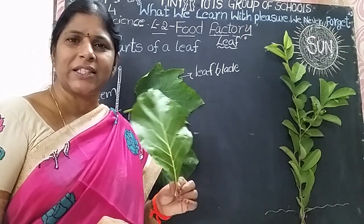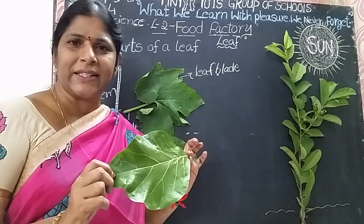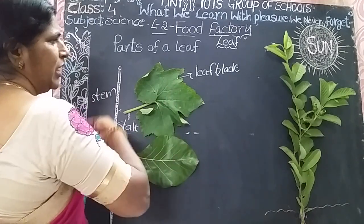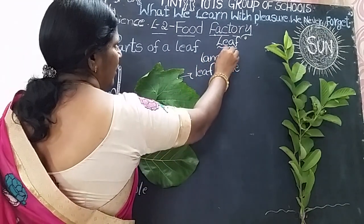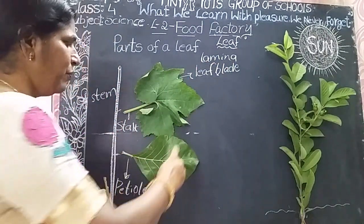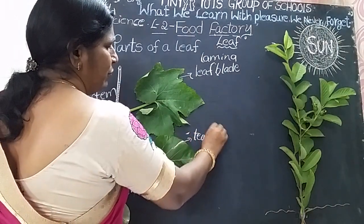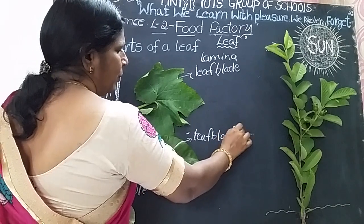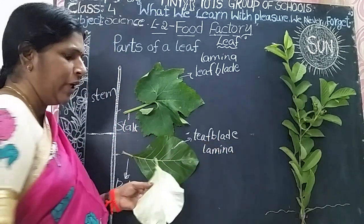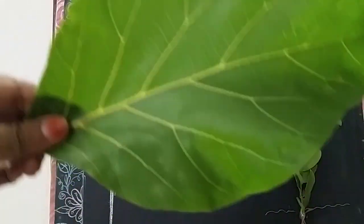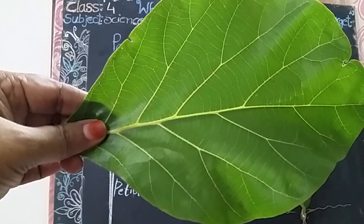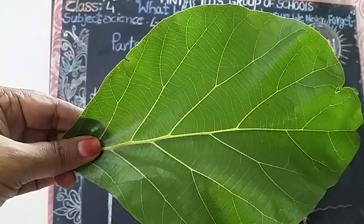Now we will discuss the structure of a leaf. This flat green portion of the leaf is called the leaf blade or leaf lamina. The flat, green and broad part of the leaf is called the leaf blade. Leaf blade is also called lamina. Lamina absorbs more sunlight for making food.